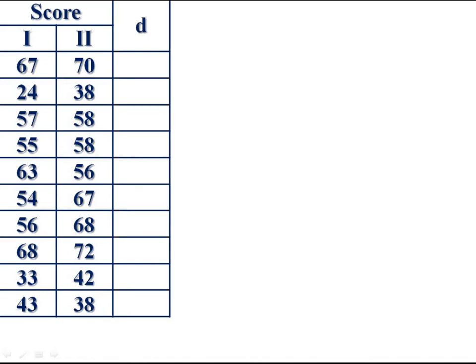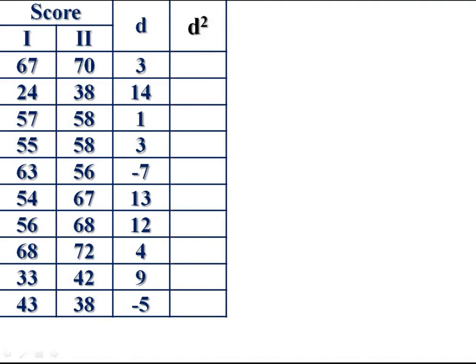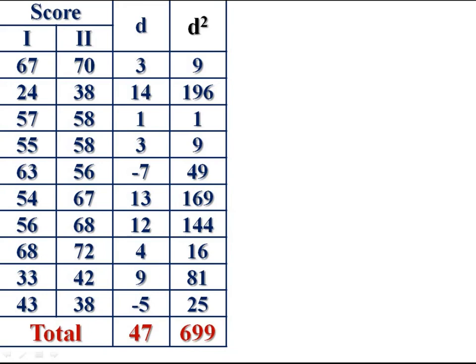Then find the difference between these two scores. That is, 70 minus 67, 38 minus 24, and so on. Find square of differences, D square. 3 square 9, 14 square 196, and so on. Get the summation of D and D square. Sigma D is equal to -47. Sigma D square is equal to 699.